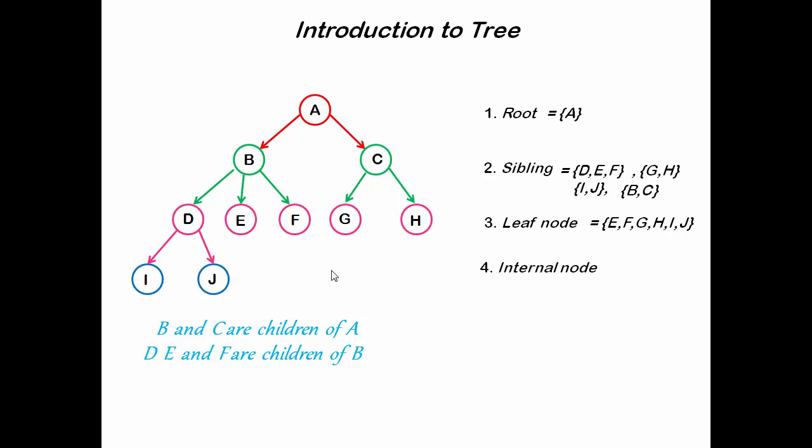All the other nodes that have at least one child are called internal nodes. For example, B, C, and D.